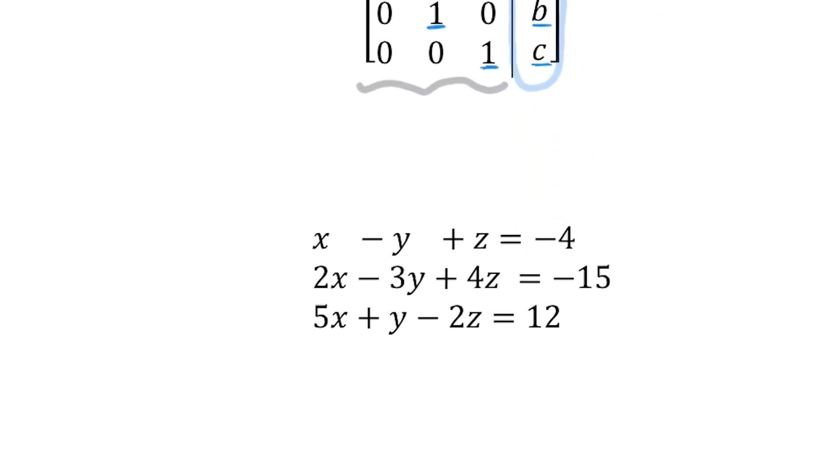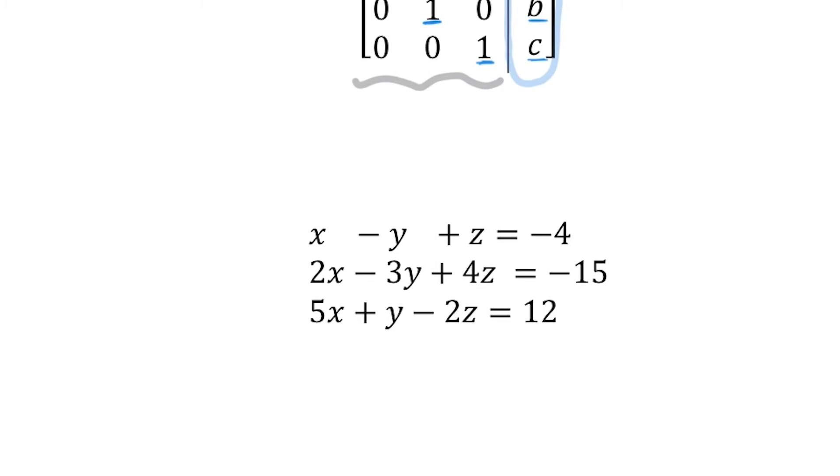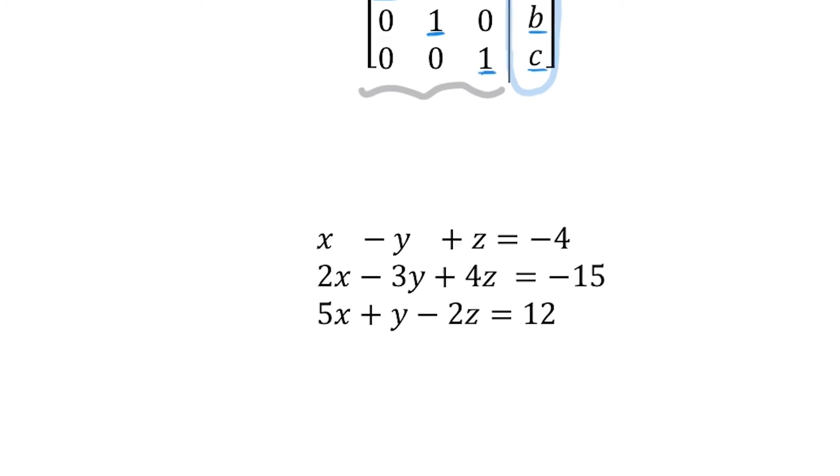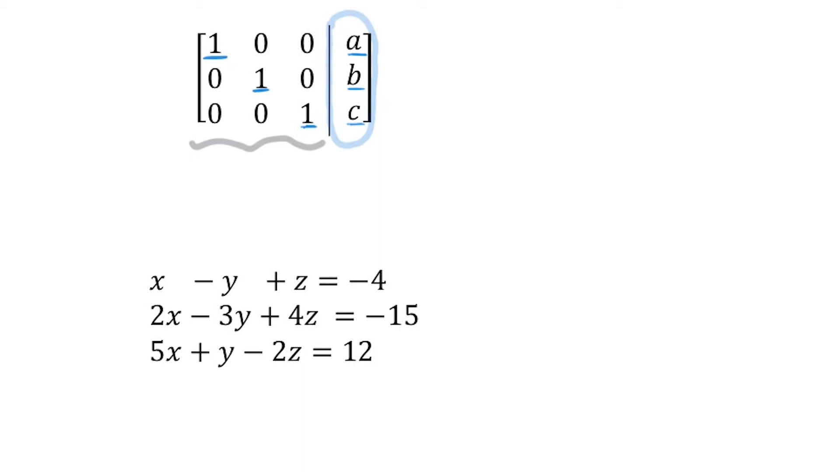So if we look at this system down here, the first thing I would want to do is create the augmented matrix. So for the augmented matrix you just put your constants in. For the top equation our constants are 1, -1, 1, 1. The second equation our constants are 2, -3, 4. And for the last equation our constants are 5, 1, -2. And then you can either put a dashed or a solid line to separate the constants from those coefficients.